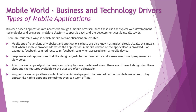First are mobile-specific versions of websites and applications, also known as m.sites. For example, accessing Facebook via a browser redirects you to m.facebook.com, which is a mobile version of the web. This means when a mobile browser addresses the application, a mobile version is provided instead of the ordinary web version — lighter in weight and more responsive, loading components faster.